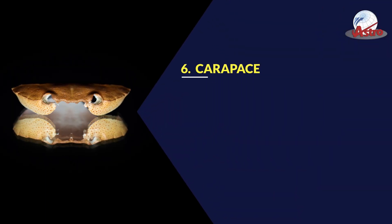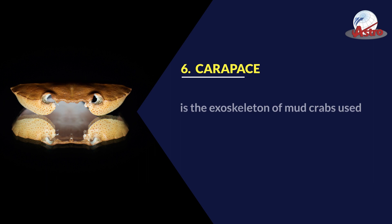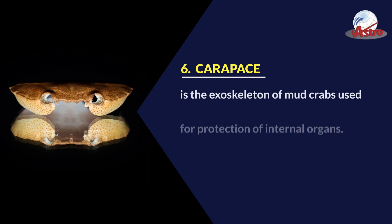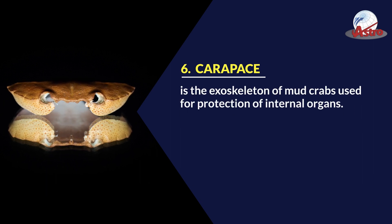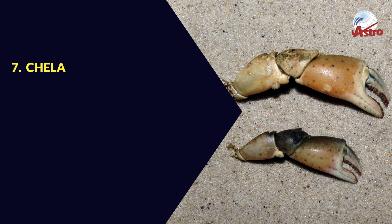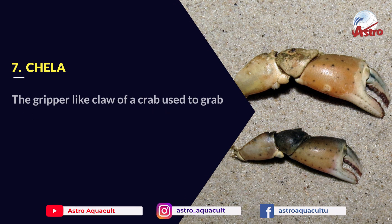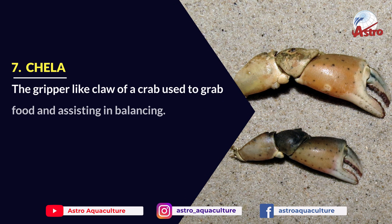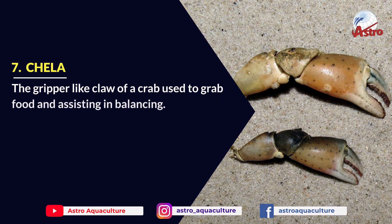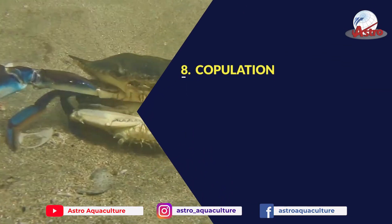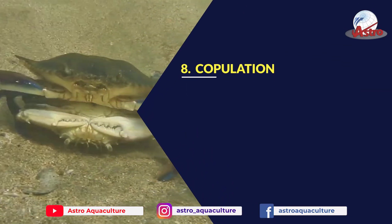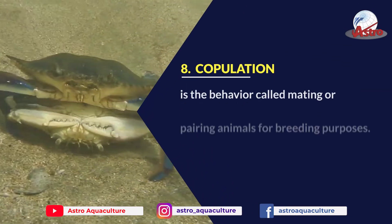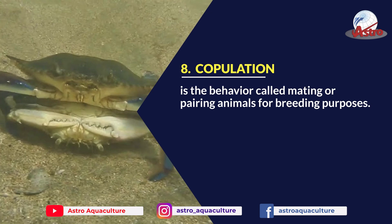Carapace: Is the exoskeleton of mud crabs used for protection of internal organs. Chela: The gripper-like claw of a crab used to grab food and assisting in balancing. Copulation: Is the behavior called mating or pairing animals for breeding purposes.